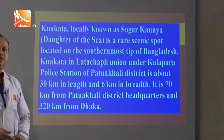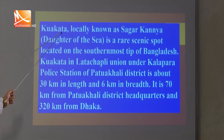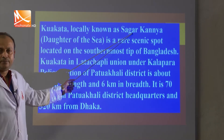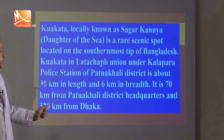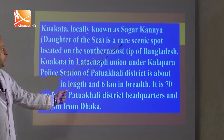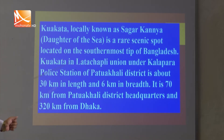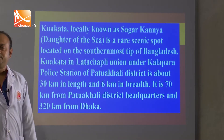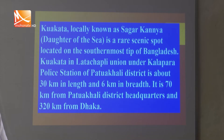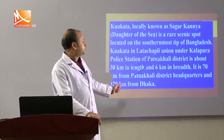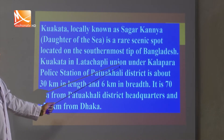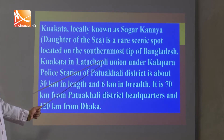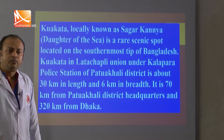Let us translate the total passage with some explanation. Kua Kata, locally known as 'Sagar Kannya' — daughter of the sea — is a rare scenic spot. Rare means birol; scenic spot means a beautiful natural place worth visiting. Located on the southernmost tip of Bangladesh, Kua Kata is in Latachapali Union under Kuaalapora Police Station of Patuakhali District. This is the location of Kua Kata.